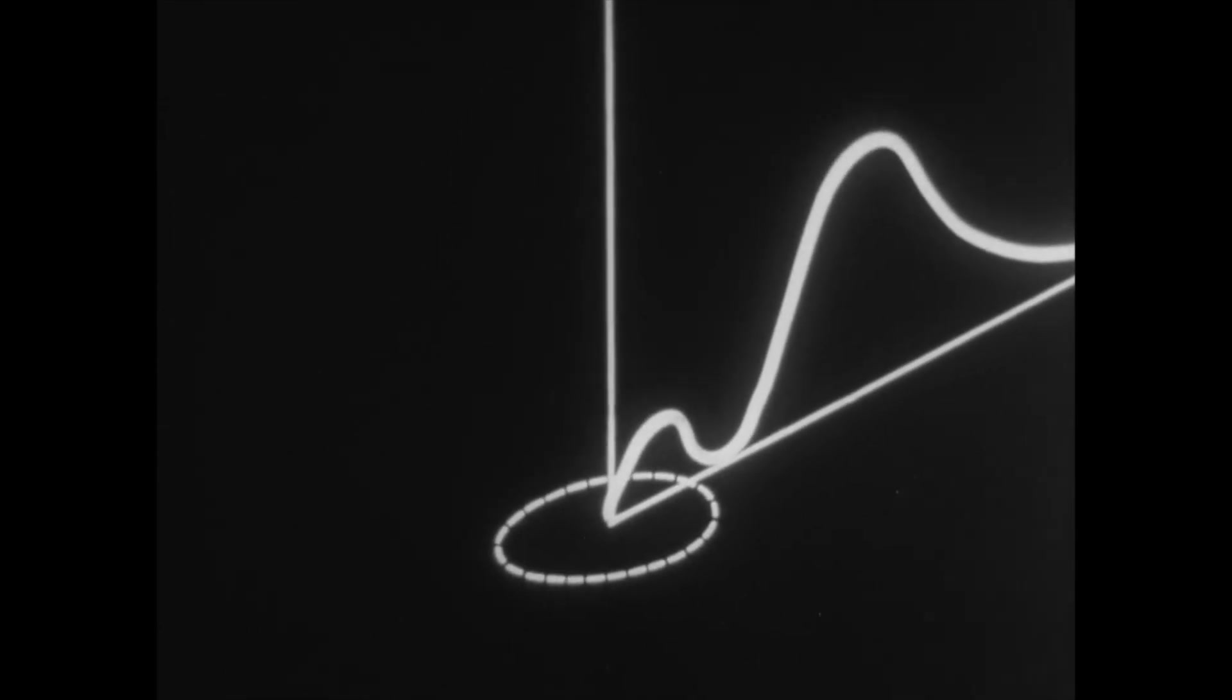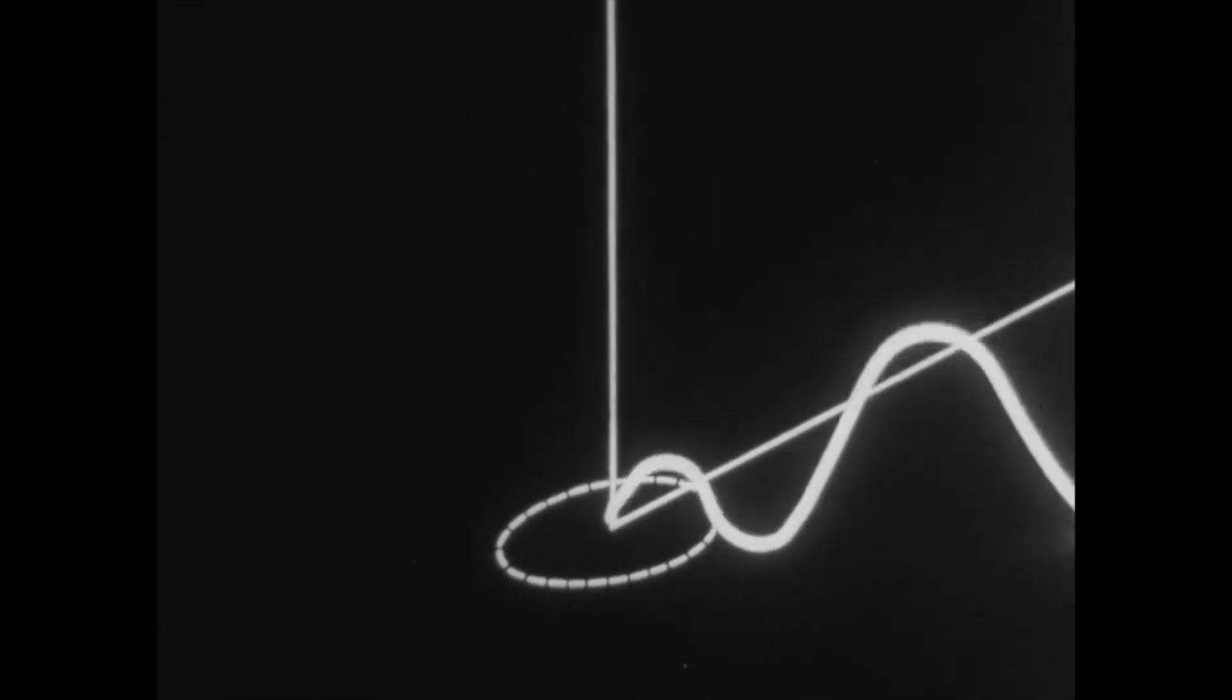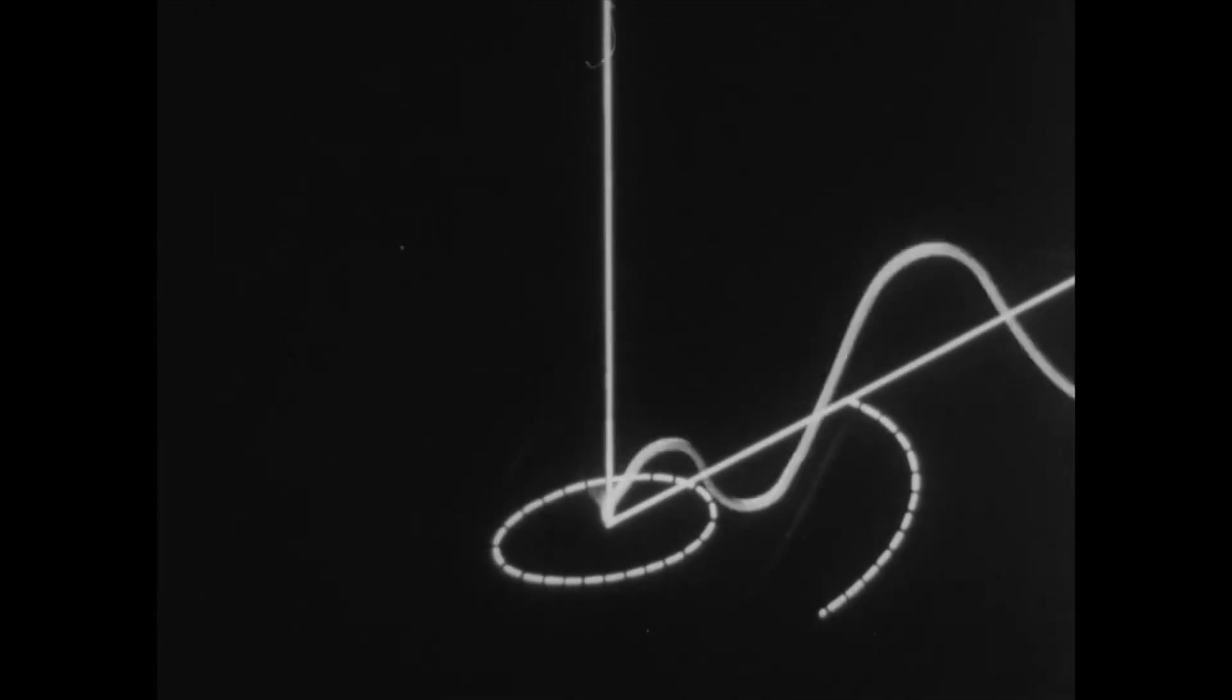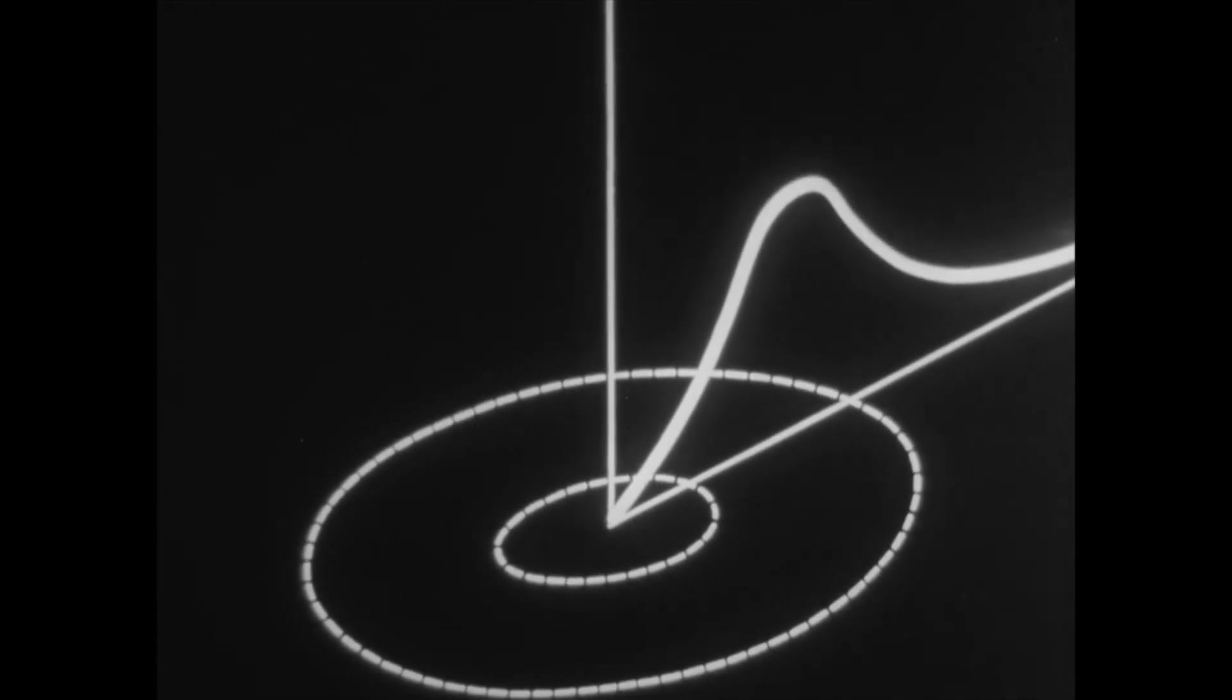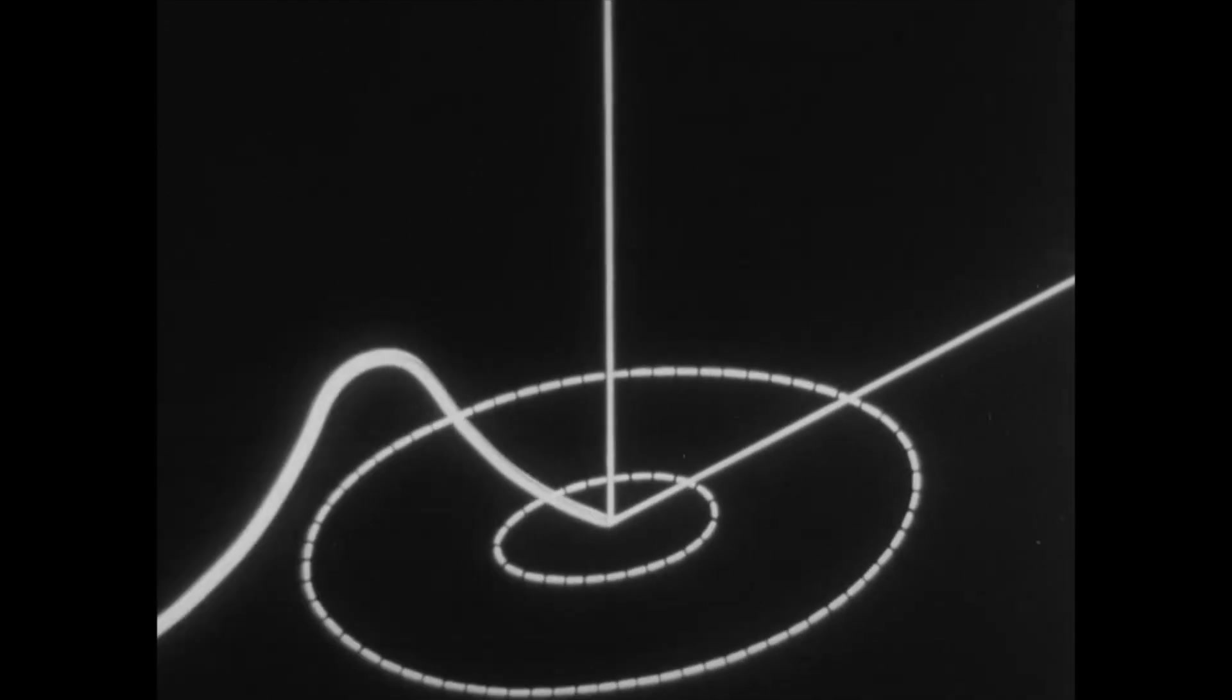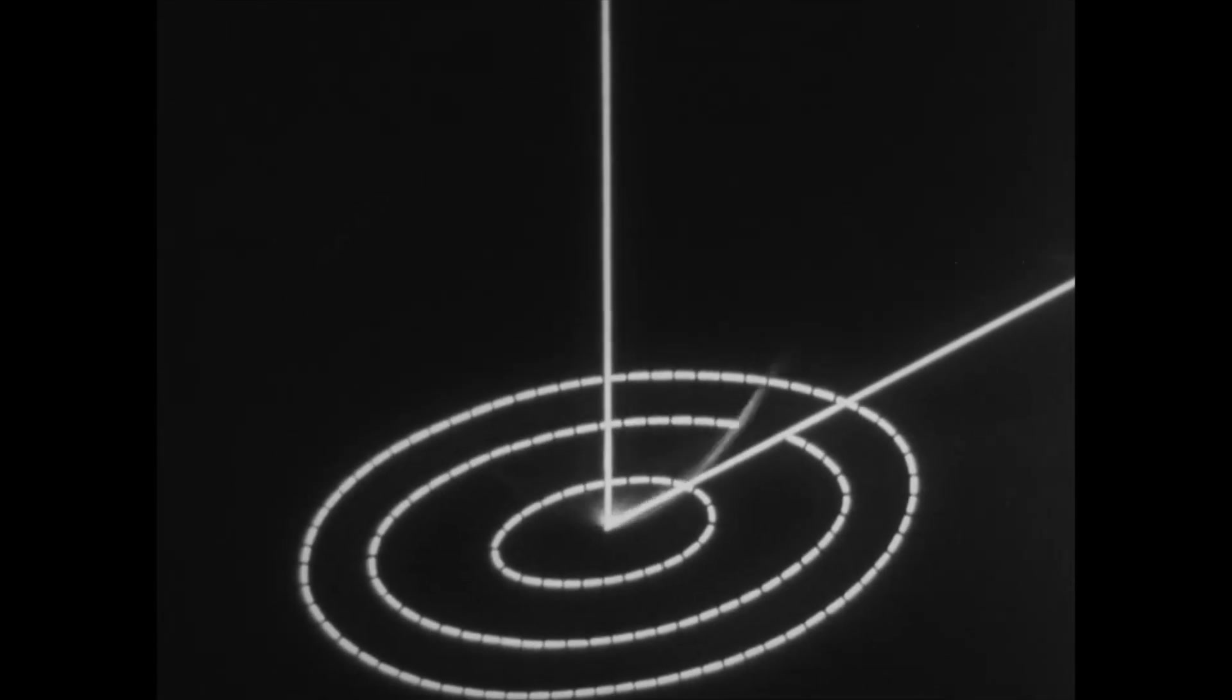And this electron radial distribution function has a more complex nature. Here, there is no correspondence to the Bohr model, but the higher the principal quantum number N, the higher the probability of finding the electron at large distances from the nucleus.